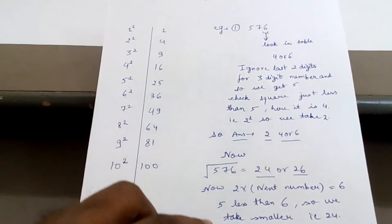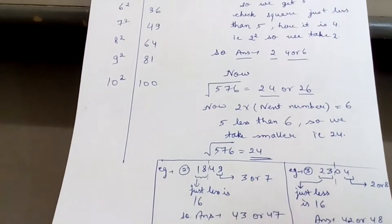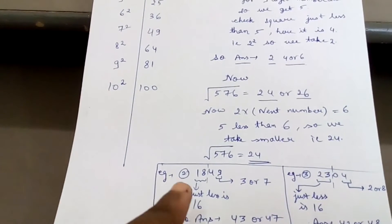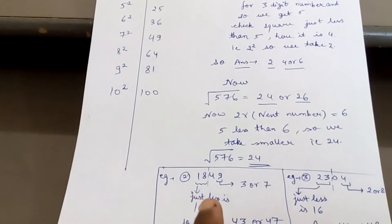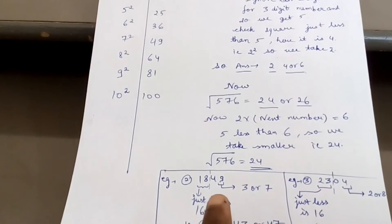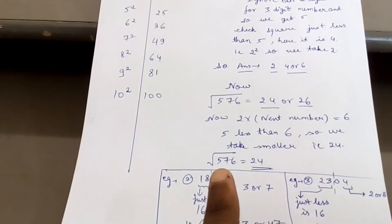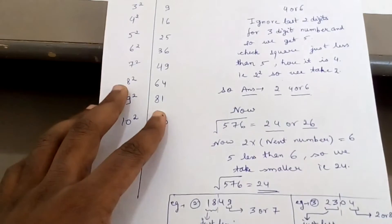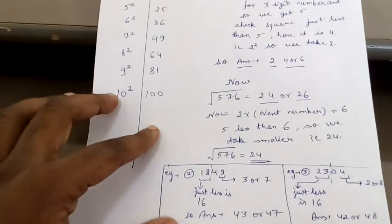So you keep aside 3 or 7 and you eliminate 2 digits from the right, that is you eliminate 49. What is left is 18. Now just below 18, what you get?